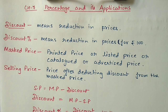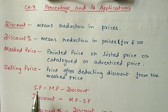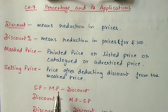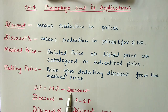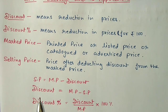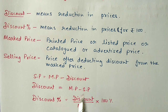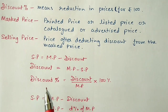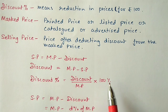Next is selling price. After giving discount, whatever price we get, that is the selling price. So selling price is marked price minus discount. For example, if marked price is 100 rupees and discount is 10%, then 100 minus 10 equals 90 rupees as selling price. If marked price and selling price are given, discount is their difference, and discount percentage equals discount divided by marked price into 100%.